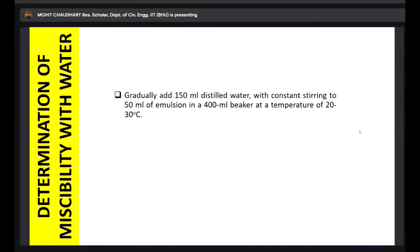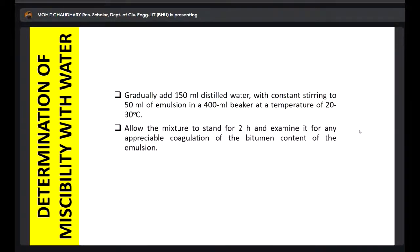The final test mentioned involves taking 150 ml of water in a beaker, adding a specified amount of emulsion, and letting it stand for two hours. After two hours, it is examined for any appreciable coagulation of the bitumen content.